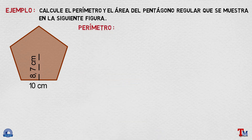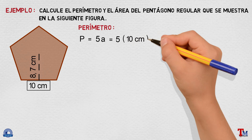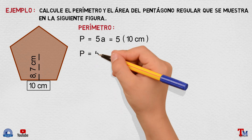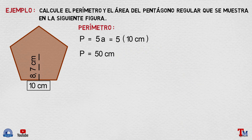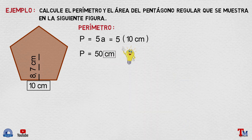Calculemos el valor del perímetro. Como ya se había definido, va a ser igual a la cantidad de lados del polígono regular — que en este caso es 5 — multiplicado por la longitud del lado, que le llamaremos A. Reemplazando, nos quedaría que esto es igual a 5 por 10 centímetros. Resolviendo la multiplicación, el perímetro del pentágono va a ser igual a 50 centímetros. Recordad que la unidad de medida del perímetro es lineal, elevado a la 1.